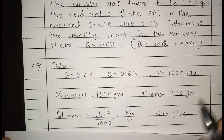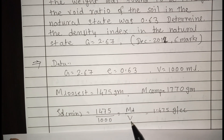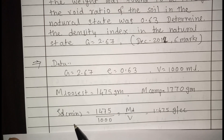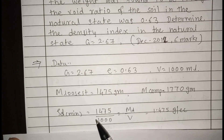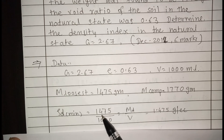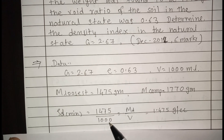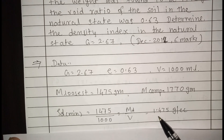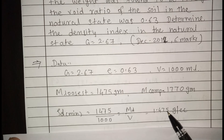We know that ρd equals dry mass divided by volume. To calculate minimum dry density, we consider the loosest state, so we take the loosest mass. Minimum dry density = 1475 divided by 1000, which equals 1.475 grams per cc.